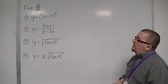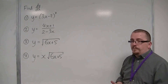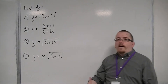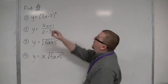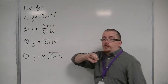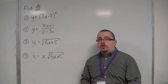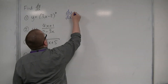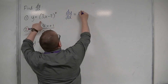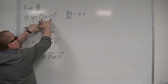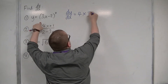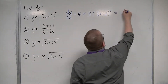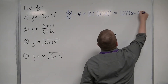I'm going to start with number one: y is equal to (3x minus 2) to the power of 4. Because we have a function of x, (3x minus 2), within another function of x, x to the power of 4 — a function within a function — we must use the chain rule. So dy/dx: the 4 comes down to the front, the derivative of what's inside comes outside, which is 3, then take 1 off the power. So we get 12 lots of (3x minus 2) cubed.